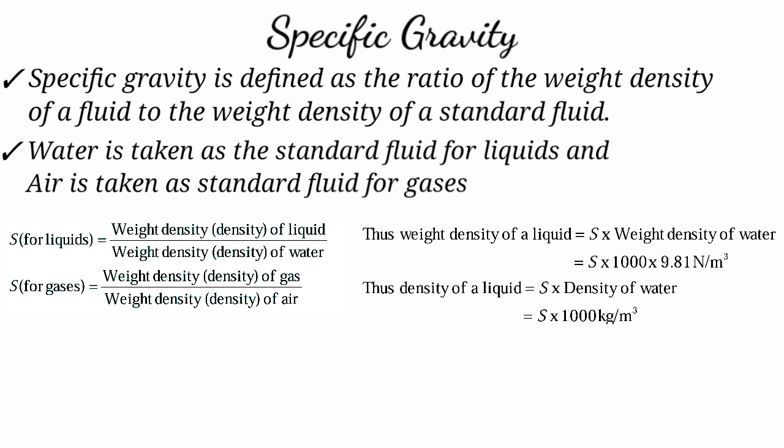The weight density of water is very important. Weight density = mass density × g. Mass density of water is 1000 and g is 9.8. So the weight density of water = 1000 × 9.8 = 9800 N/m³. The weight density of an unknown fluid = specific gravity × 1000 × 9.8. Similarly, mass density of unknown fluid = specific gravity × 1000.